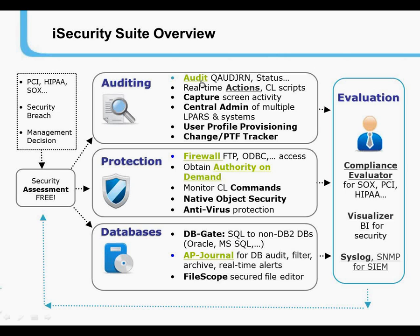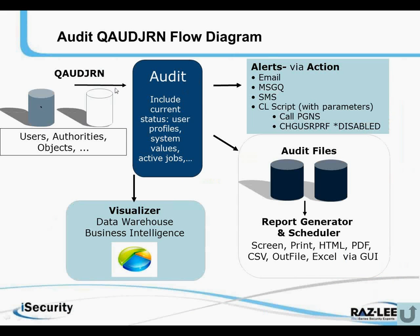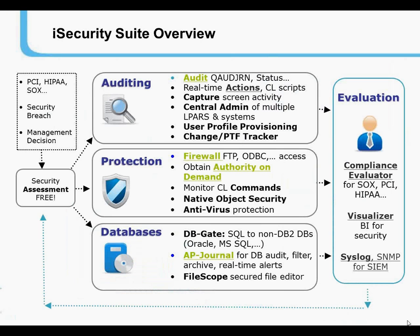Let's look at our Audit product. Audit reads entries from the QAudit journal regarding users, authorities, and objects. It can include current status information regarding user profiles, system values, and active jobs. It can initiate real-time alerts via our Action product, write information to our own audit files for long-term storage and report generation, and feed our data warehouse business intelligence tool called Visualizer so that you can find the needle in the haystack — the event which happened at a certain time and date that you'd like to investigate.